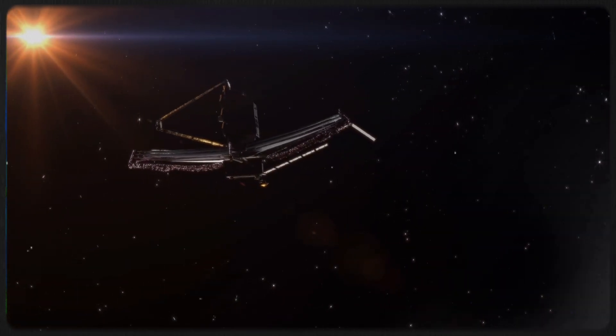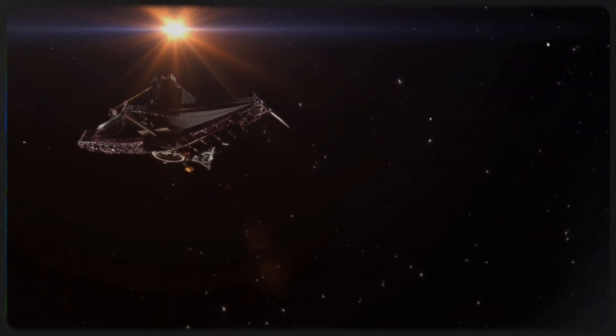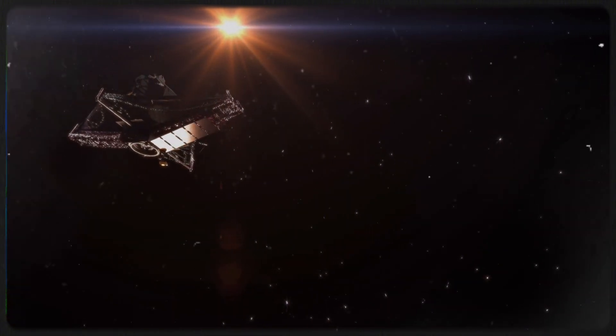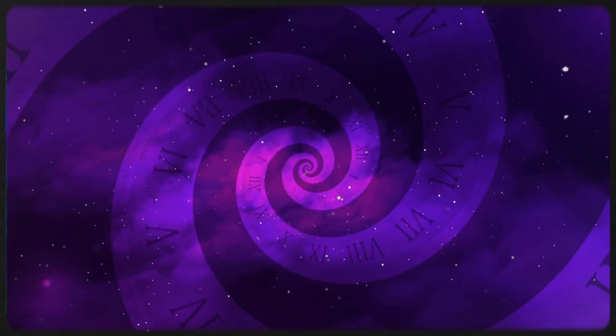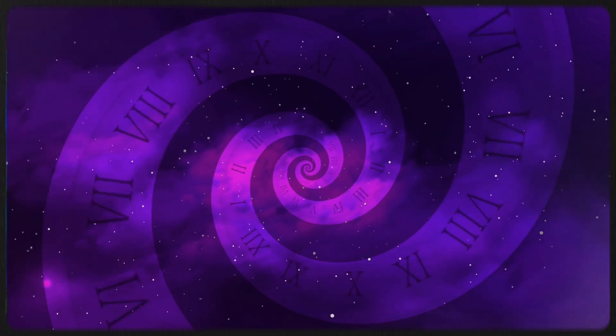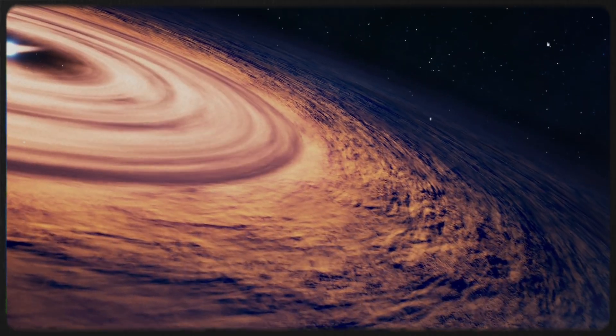However, it is crucial to acknowledge that these findings may not be as straightforward as they seem. The galaxies identified by Webb may not be typical galaxies at all. Given that we are peering farther back in time than ever before, there is a possibility that these objects could be something else entirely, such as hidden supermassive black holes or some unknown phenomenon.